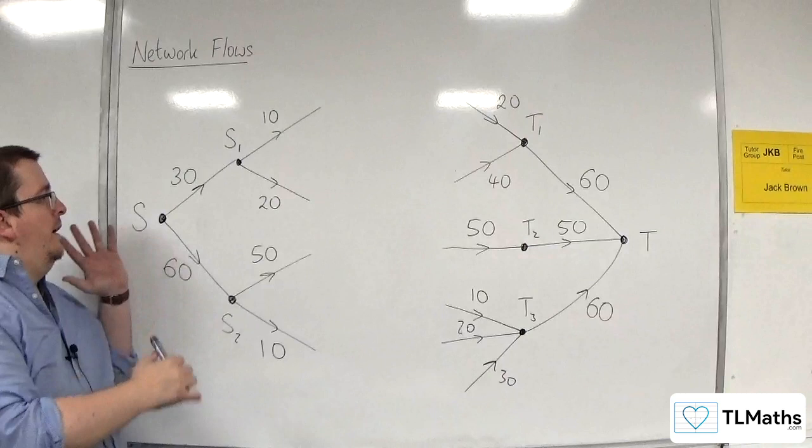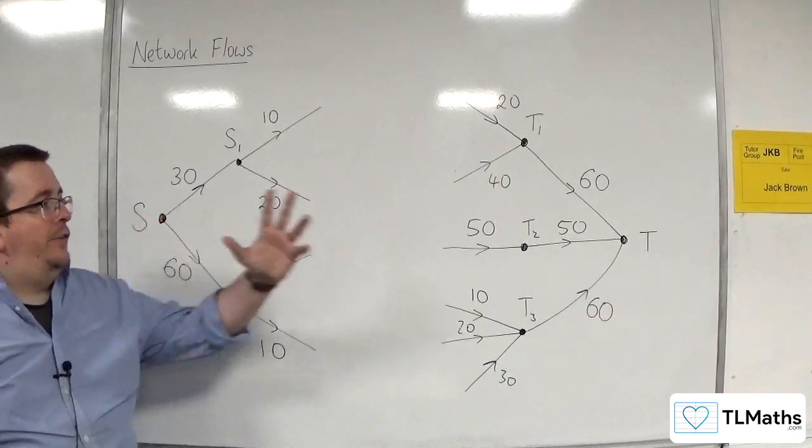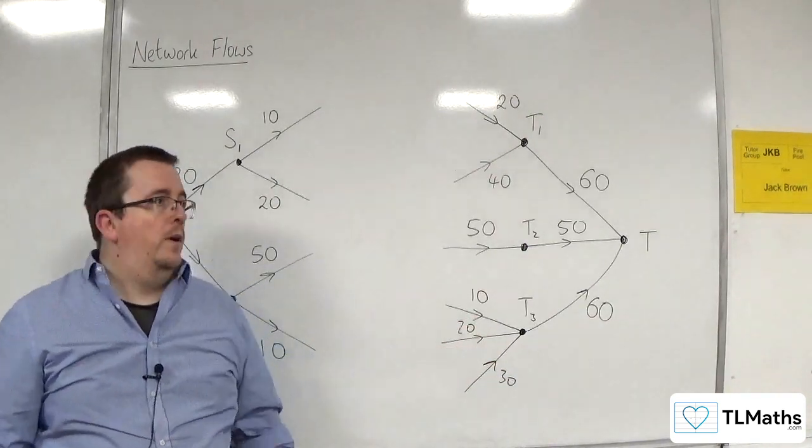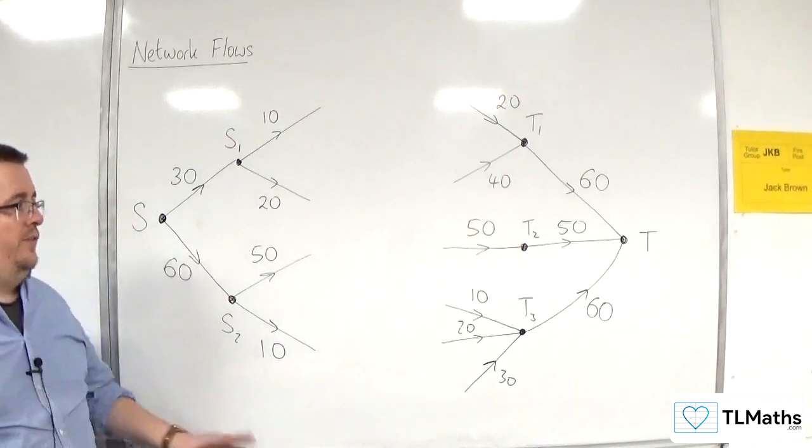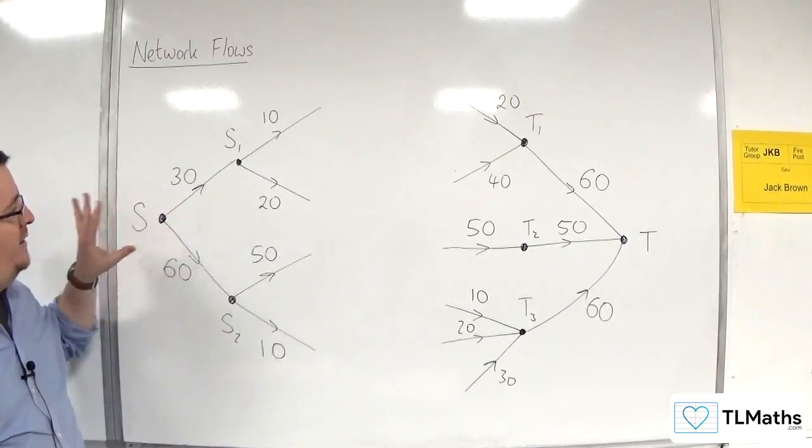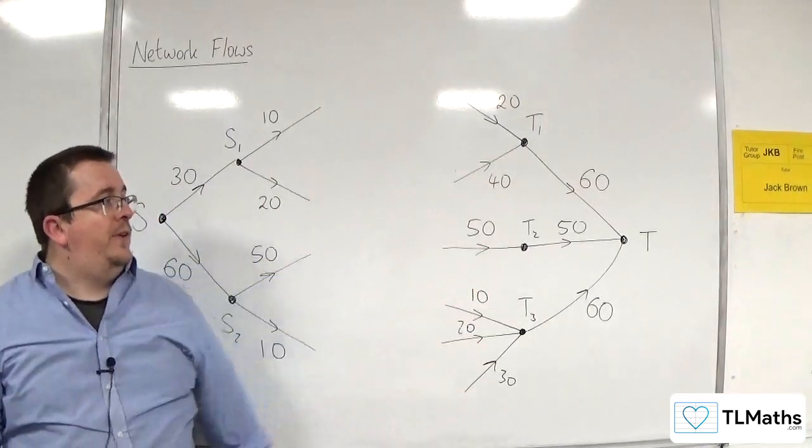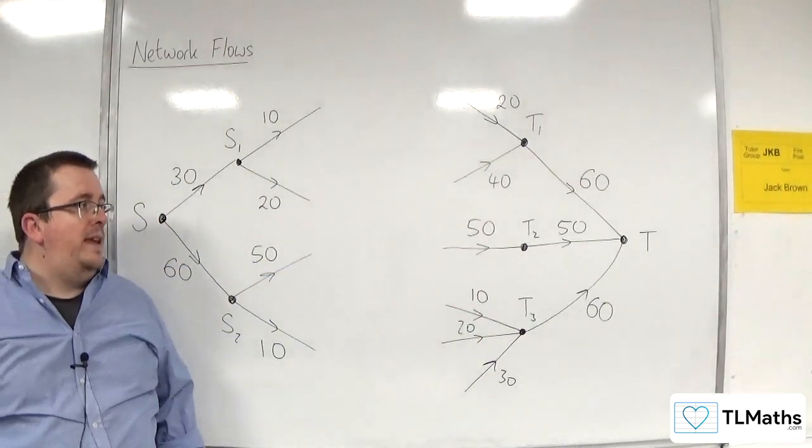And now I've added in a super source and a super sink into my network. I don't know what's going on in the middle. Lots of other edges, lots of other pipelines. It doesn't matter. But that's how we add a super source and a super sink into the network.